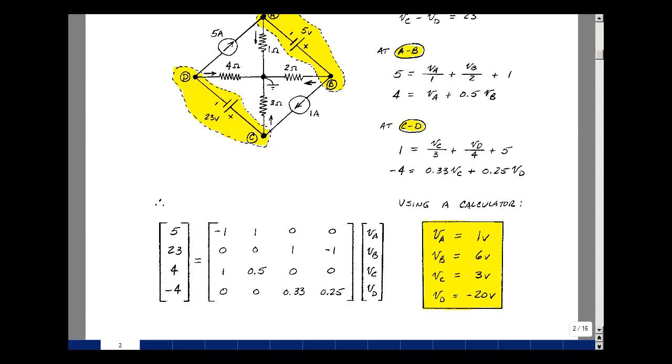And I did it in mine here, and I found that V sub A was 1 volt, V sub B was 6 volts, V sub C was 3 volts, and V sub D was minus 20. Maybe try using Kramer's rule and see if you get the same answers. And this is supplemental problem 3.2.